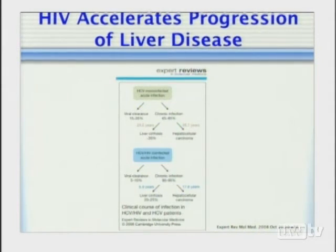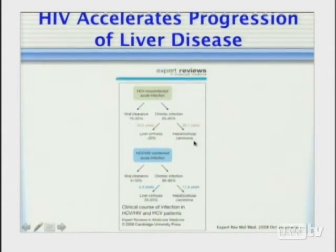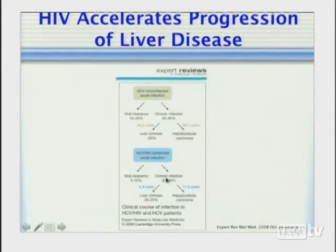We started putting all these hepatoprotective functions together and wondered about other applications. In HCV-HIV co-infection, mono-infected HCV patients develop hepatocellular carcinoma over about 30 years and cirrhosis over about 23 years. But in the context of HCV-HIV co-infection, progression is accelerated: hepatocellular carcinoma arises in about 17 years versus 28 years, and liver cirrhosis requires only 6 to 9 years instead of 23 years.